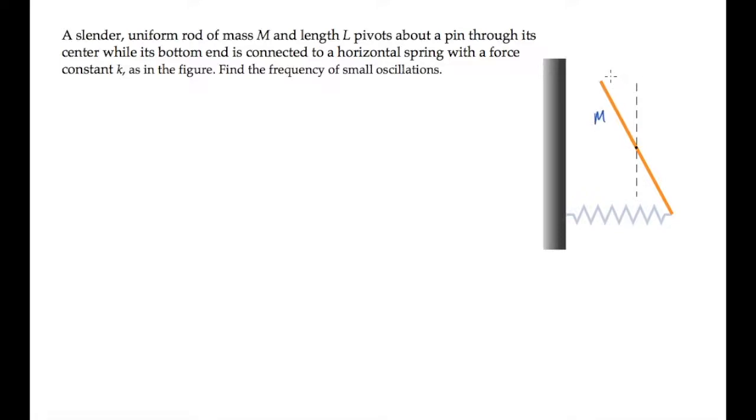The orange rod in this problem has a mass m and length l. It pivots about a pin through its center as its lower end is moved back and forth by the attached spring with spring constant k. We're asked to find the frequency of small oscillations.